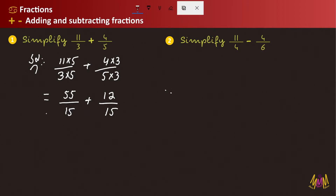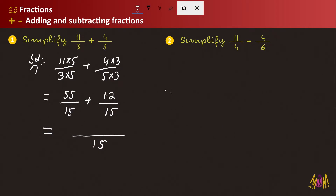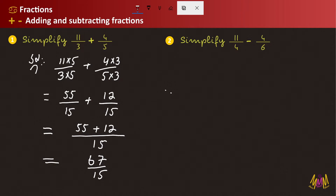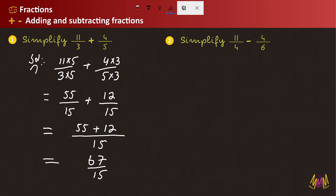Since both denominators are 15, we add the numerators: 55 plus 12 equals 67. The answer is 67 divided by 15. We check if this can be simplified by dividing 67 and 15 — and we simplify to get 67 divided by 15 as the final answer for Example number 1.